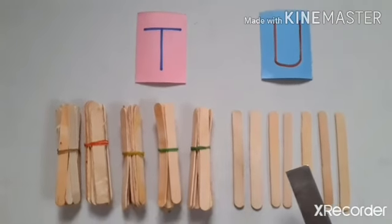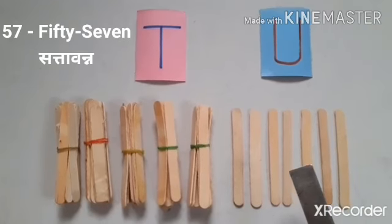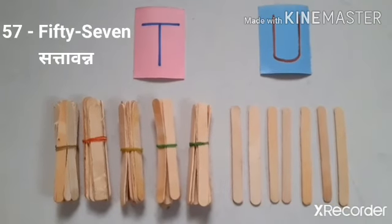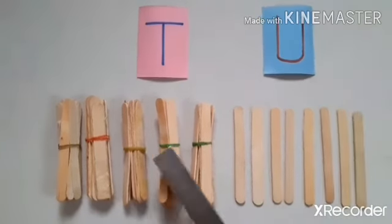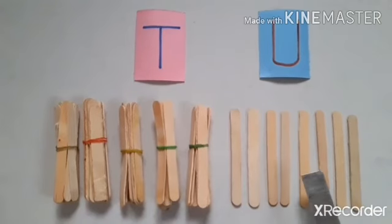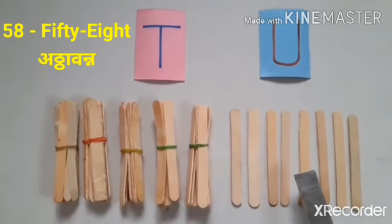5 tens, 7 units equals 57. 5 tens, 8 units equals 58.